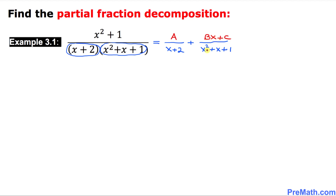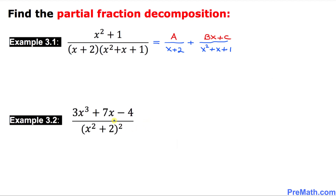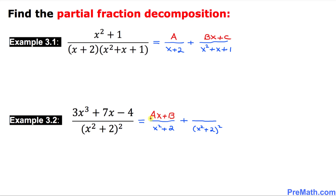In our next example, the denominator has a quadratic factor repeating twice, which means we are going to put two fractions. When it is repeating twice, we put the first fraction with denominator (x² + 2)¹ and the second with denominator (x² + 2)². Since we are dealing with quadratic factors, the numerator of the first fraction is Ax + B, and likewise the second is Cx + D — always a constant times x plus another constant.